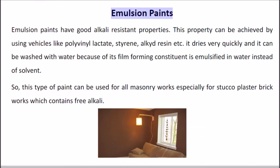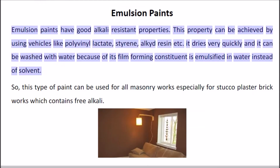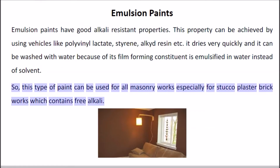Emulsion paints have good alkali resistant properties. This property is achieved by using vehicles like polyvinyl lactate, styrene, and alkyd resin. It dries very quickly and can be washed with water because its film-forming constituent is emulsified in water instead of solvent. This type of paint can be used for all masonry works, especially for stucco plaster and brick works which contain free alkali.